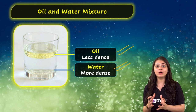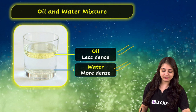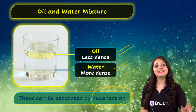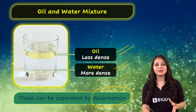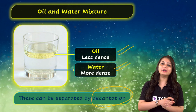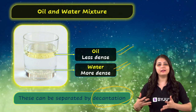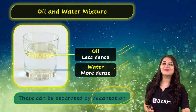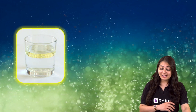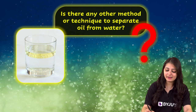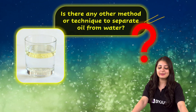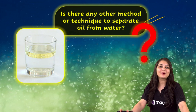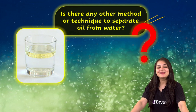This mixture of oil and water can be separated by the process of decantation — we can allow oil to flow into another container and water will be left behind. But we all know about decantation. My question to you is: is there any other method or technique to separate oil from water?